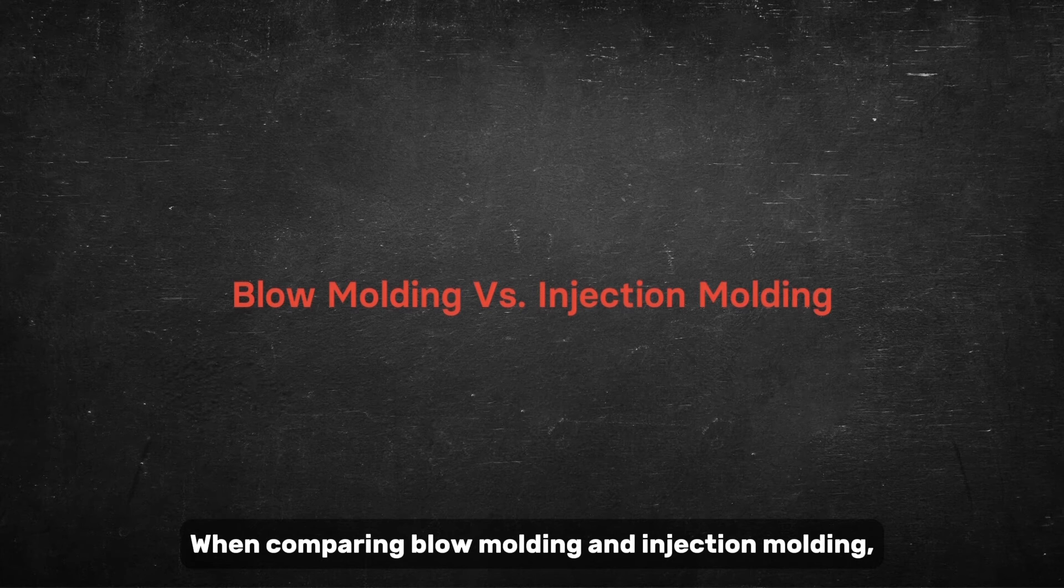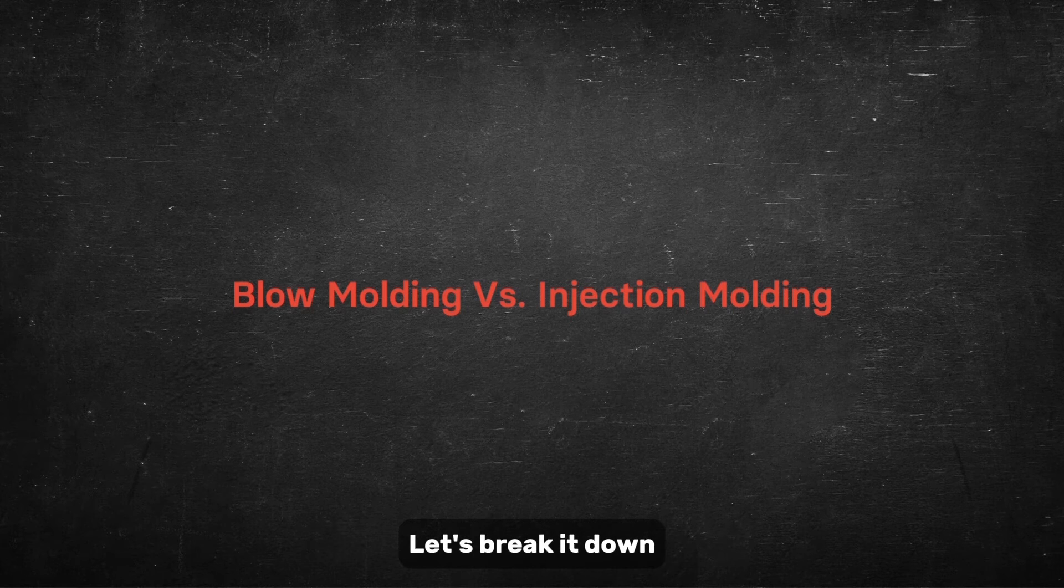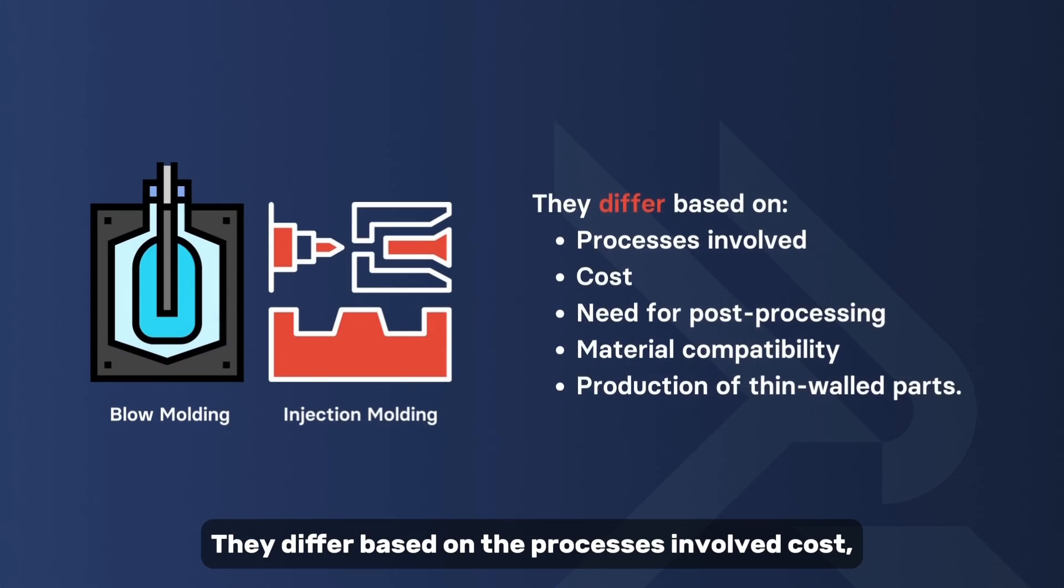When comparing blow molding and injection molding, they have significant differences. Let's break it down. They differ based on the processes involved, cost, the need for post-processing, material compatibility, and the production of thin-walled parts.